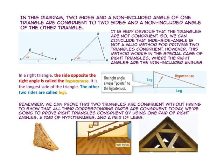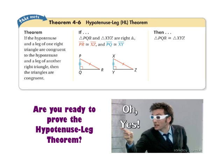Remember, we can prove that two triangles are congruent without having to show that all of their corresponding parts are congruent. Today, we are going to prove right triangles congruent by using one pair of right angles, a pair of hypotenuses, and a pair of legs. The hypotenuse-leg theorem says that if the hypotenuse and a leg of one right triangle are congruent to the hypotenuse and a leg of another right triangle, then the triangles are congruent.